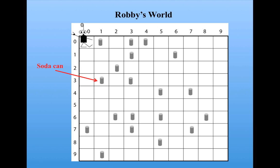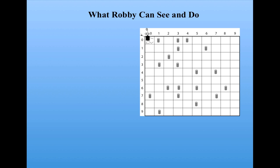We have to give Robby a program that tells him what to do at each step. I could program that myself, but instead I'm going to use a genetic algorithm to evolve programs to do this task. So first I need to tell you what Robby can see and what he can do.